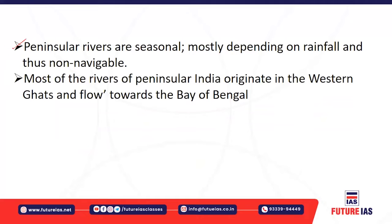Unlike the Himalayan rivers, the peninsular rivers are seasonal — mainly rain-fed. They flow during the rainy period, and during the drier or winter period they have very little water or sometimes dry up completely. That is why they are non-navigable and non-perennial — they don't flow throughout the year with minimum flow.